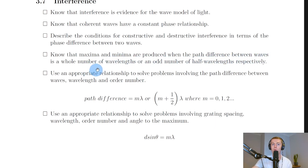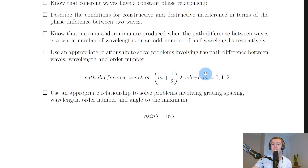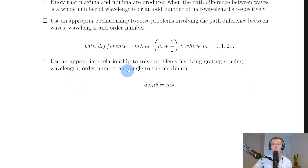Maxima are produced when the path difference between waves is a whole number of wavelengths; minima when it's an odd number of half-integer wavelengths. For maxima: path difference = mλ, where m is an integer (0, 1, 2, …). For minima: path difference = (m + ½)λ, where again m is an integer (0, 1, 2, …).